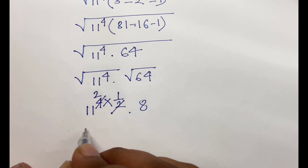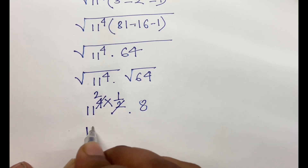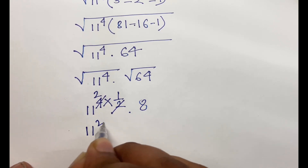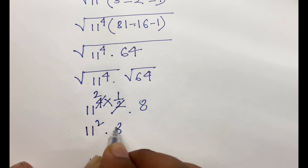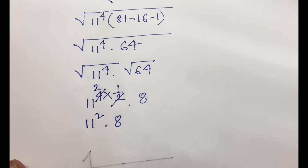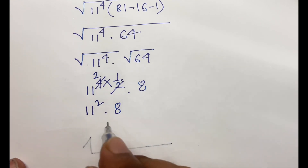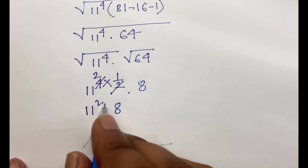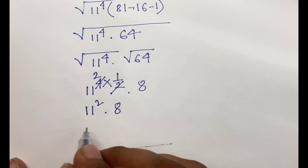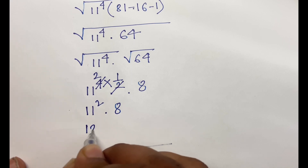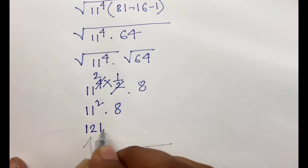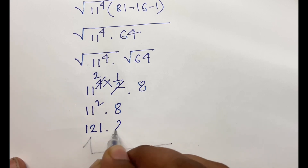The square root of 11 to the power 4, using the exponent rule with power one-half, gives 11 to the power 2. So we get 11 squared times 8. We know that 11 squared is 121, so the expression becomes 121 times 8.